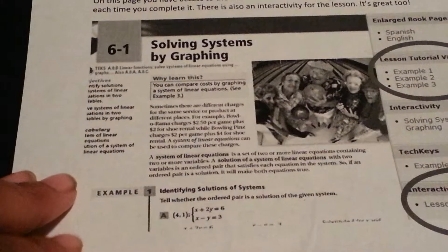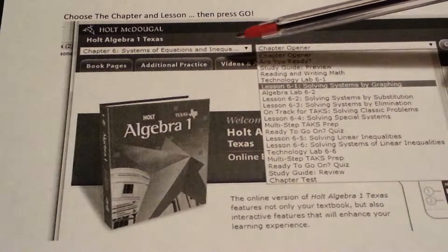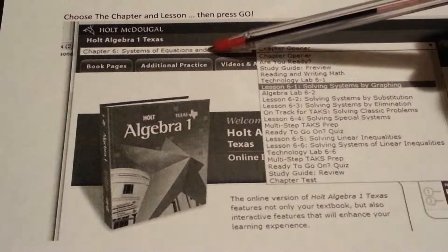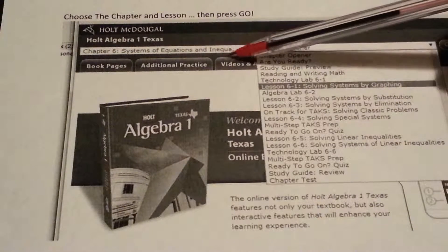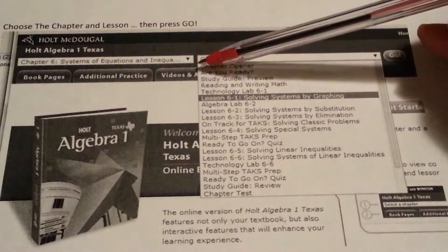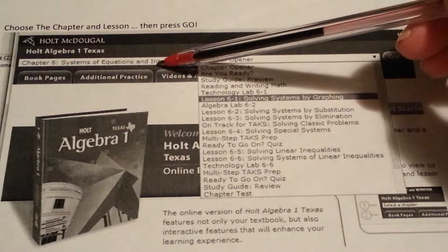After that, you can access any chapter in the book. Right now we're in chapter 6, talking about systems of equations. We will go to inequalities next. You just click this arrow here, bring the drop menu down, and choose systems of equations.